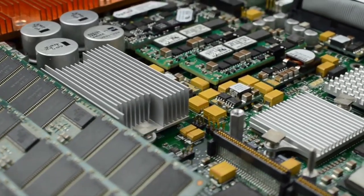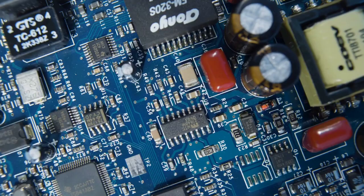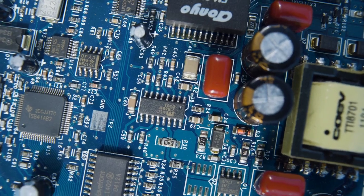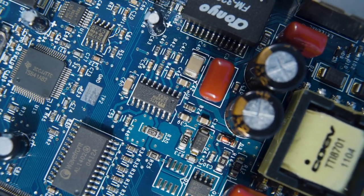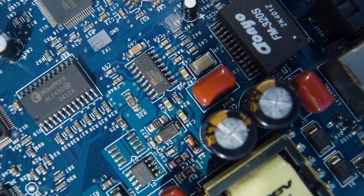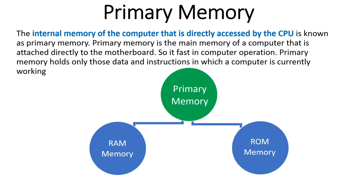RAM and ROM are the examples of primary memory. RAM is the temporary memory that holds the data and instructions of the currently running program, whereas ROM is the permanent type of primary memory that holds the BIOS program or firmware software. There is also another type of primary memory called cache memory.